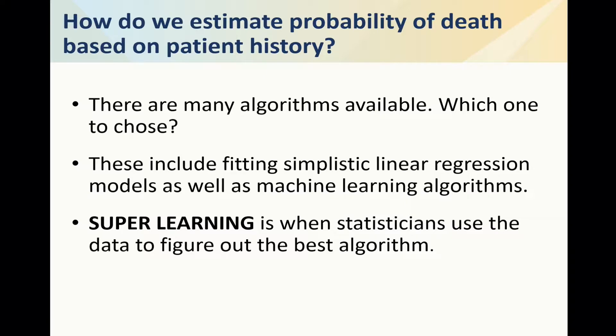To actually estimate the effect of the treatment, you want to learn the effect for every individual in your study. Every individual is characterized by a certain history. So you really want to understand: if I give you the treatment, what would be your probability of death? If I give you the control, what would be your probability of death, and what's the difference? Then we take the average, which gives us the average treatment effect used to evaluate overall performance.